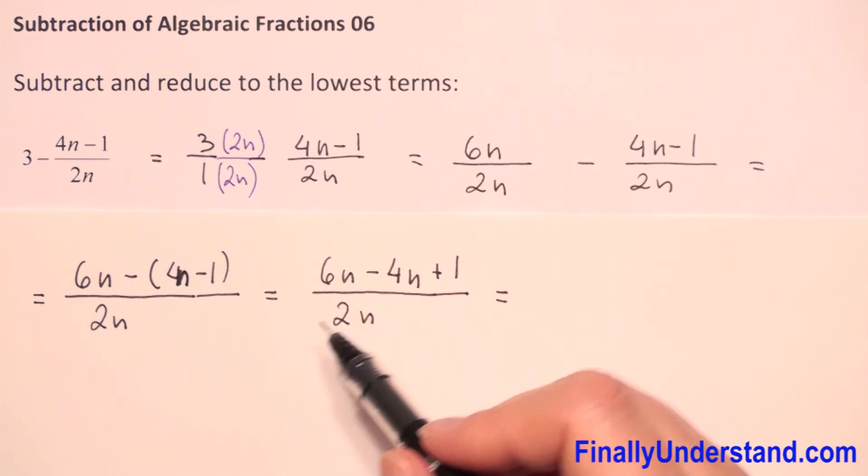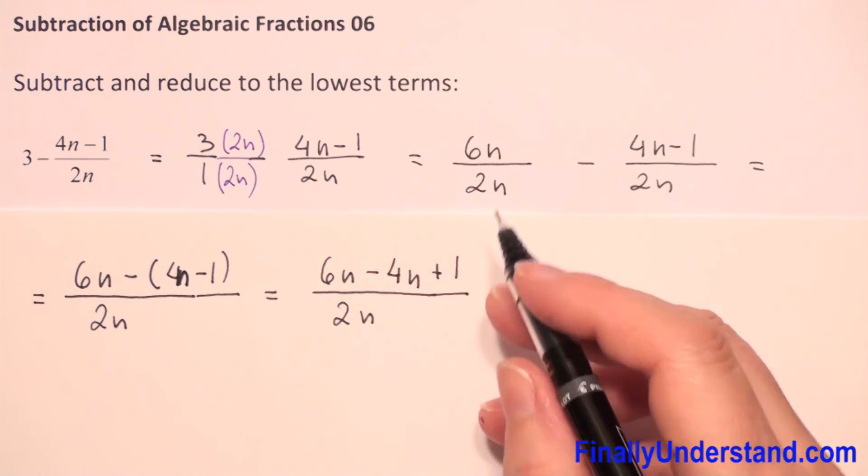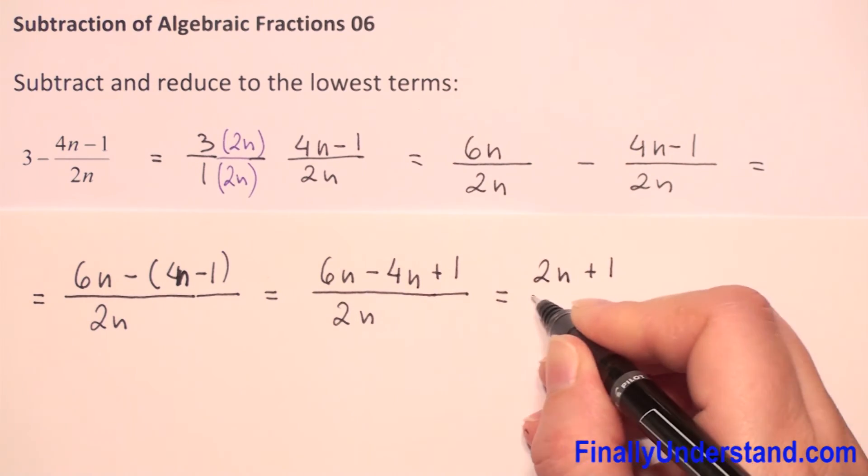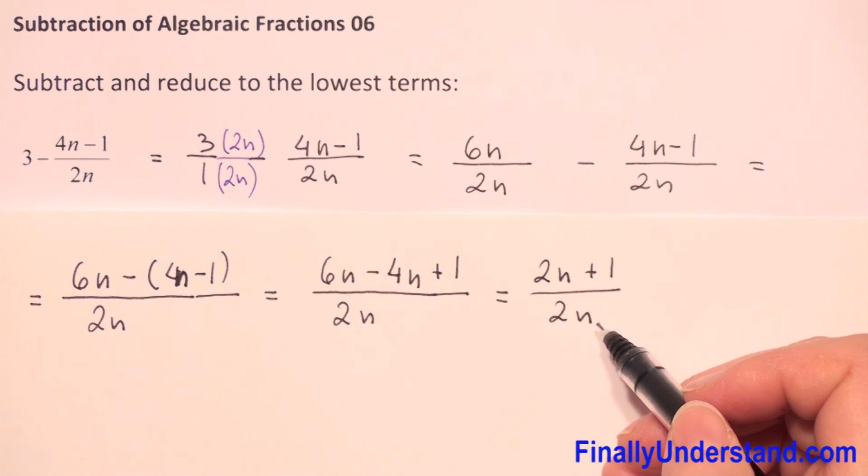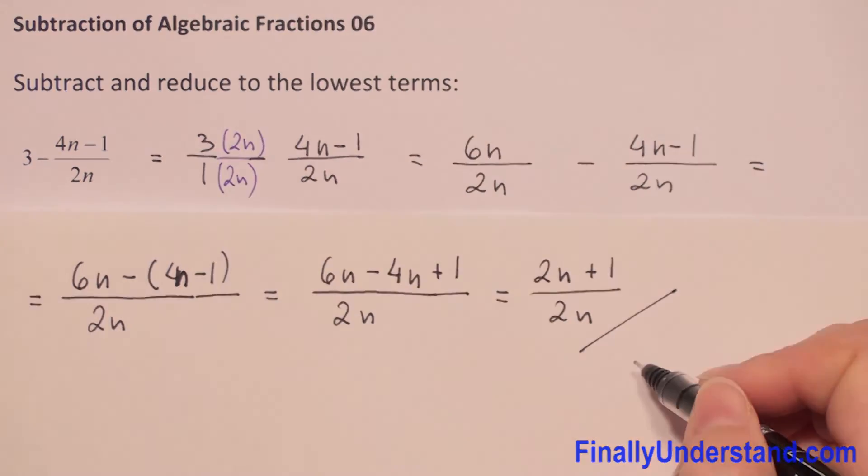Now we combine the like terms. 6n minus 4n is 2n, plus 1 over 2n. Because we cannot factorize our numerator, we cannot reduce anything. This is my solution.